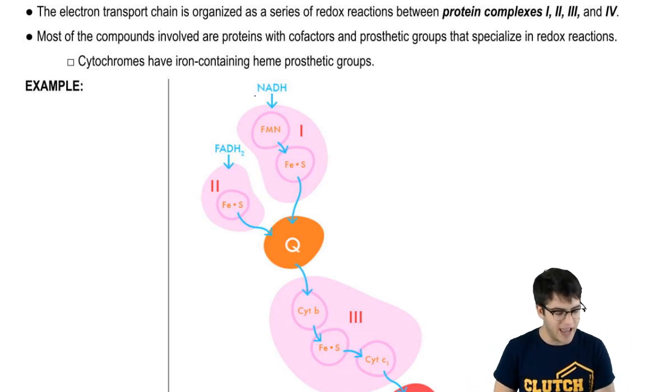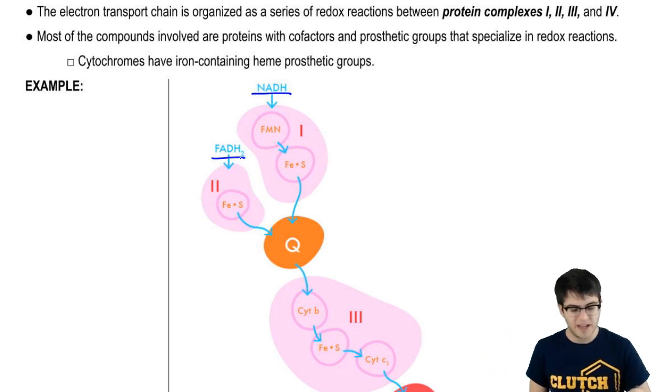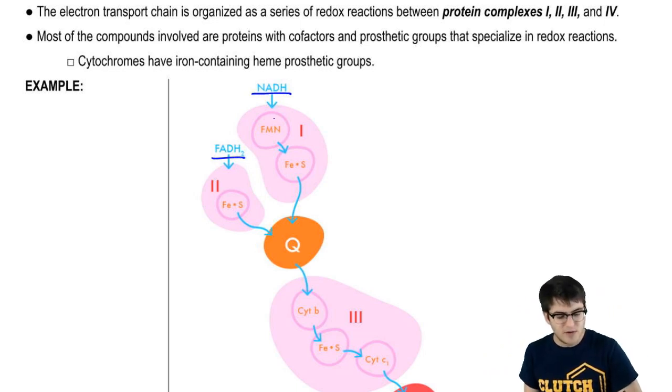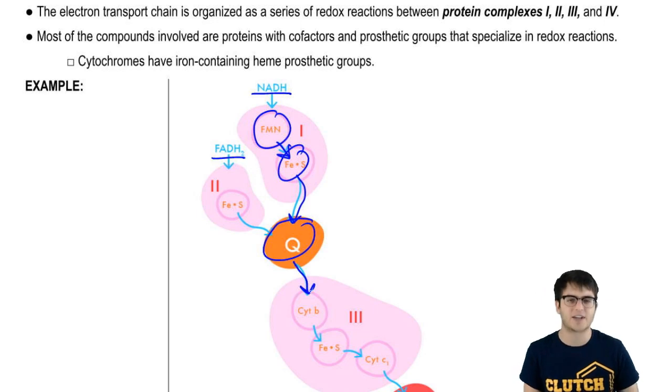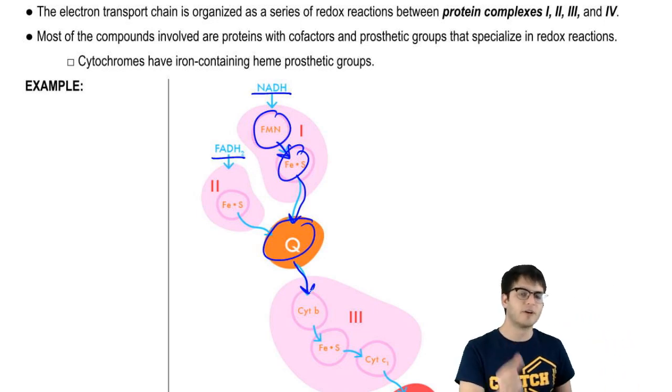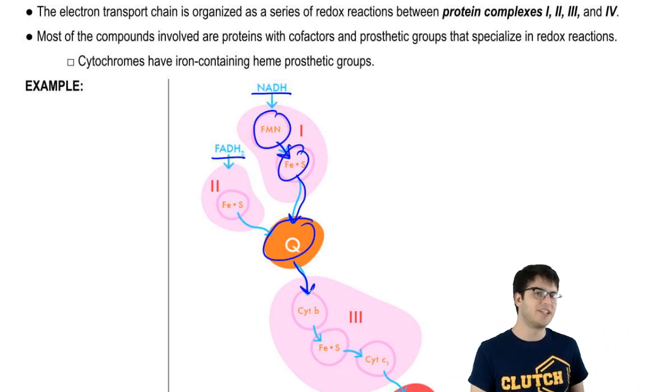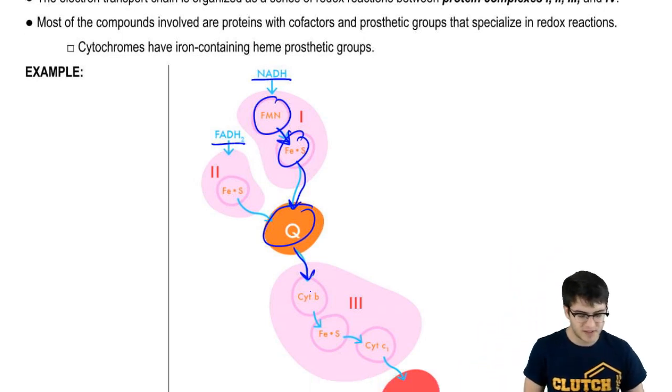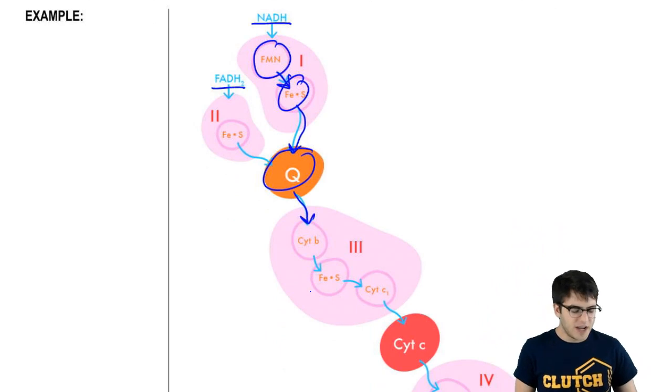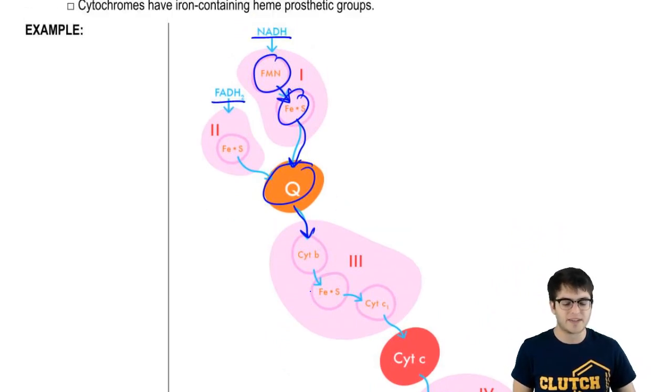So what happens when NADH and FADH2 dump their electrons off is those electrons move through a series of redox reactions. And each redox reaction lowers the free energy or the potential energy of those electrons by just a little bit. And we kind of already talked about why this is.